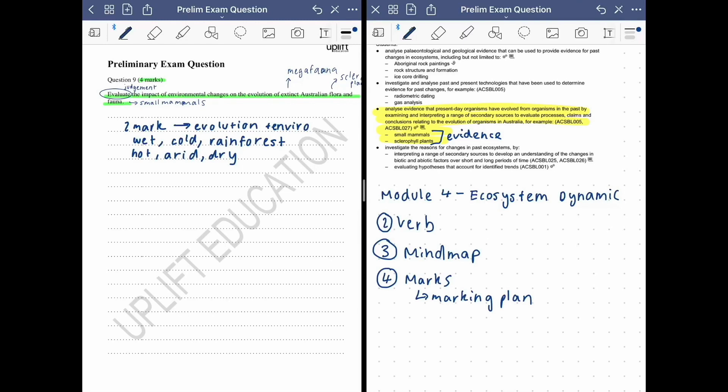So it explains the reason as to why there was the extinction of the megafauna species and the evolution and introduction of essentially these sclerophyll plants and small mammals that evolved from the previous species. So two marks would go to explaining this.